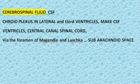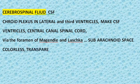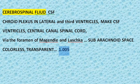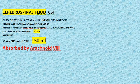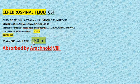Now, how does cerebrospinal fluid look? It is colorless and transparent, just like water, but it has a slightly higher specific gravity than water — 1.005. It is also alkaline. We have 150 ml of cerebrospinal fluid in the body, however we produce around 500 ml of CSF daily.